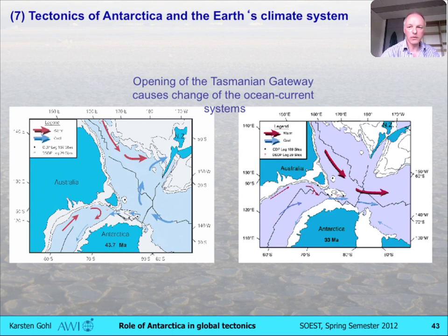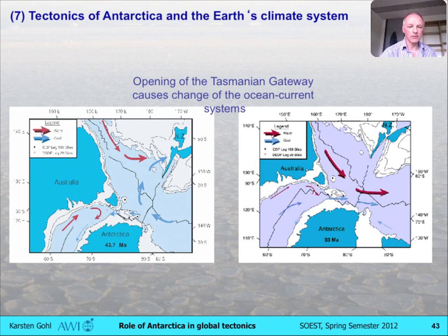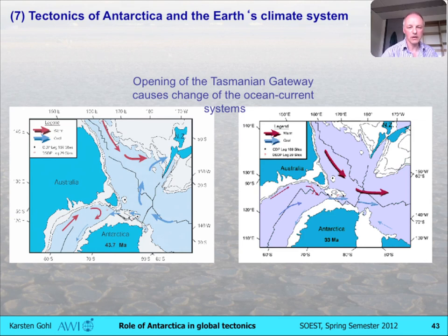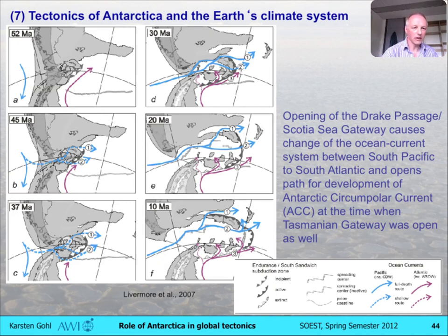The opening of both gateways — the best models we have for deep water opening — say that it occurred at the Eocene-Oligocene boundary where we have the major change in the oxygen isotope record and with that the temperature change. With the example of the Tasmanian gateway, ocean modelers think that before the breakup, the small ocean basin between Australia and Antarctica was basically a warm pool, with warm water diverted coming along the eastern Australian margin, basically diverting towards New Zealand and then moving north again — quite isolated pools, until the opening happened and deep water passage was possible between the Indian Ocean south of Australia into the Pacific.